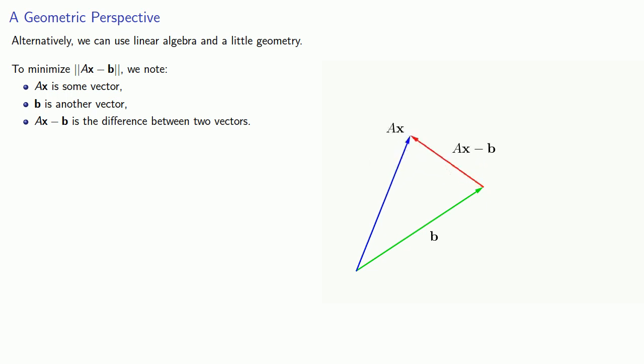So as we change x, this vector Ax and Ax minus b will change. And so to minimize the length of this vector, we can make Ax minus b perpendicular to Ax.